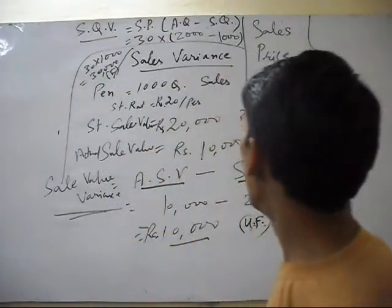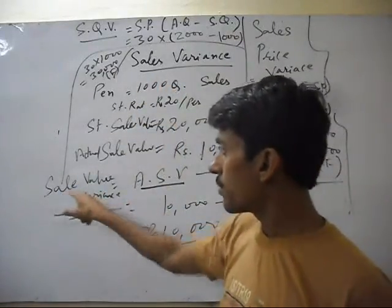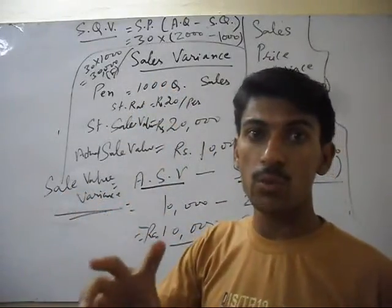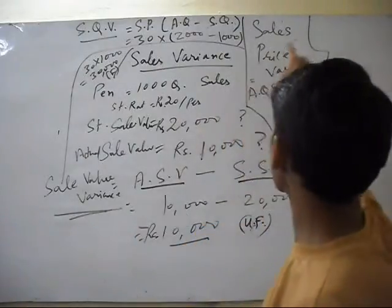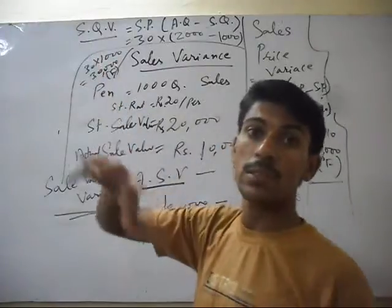Now, this sales variance, sales value variance, can be divided into two parts. One is sales price variance, the other is sales quantity variance or sales volume variance.